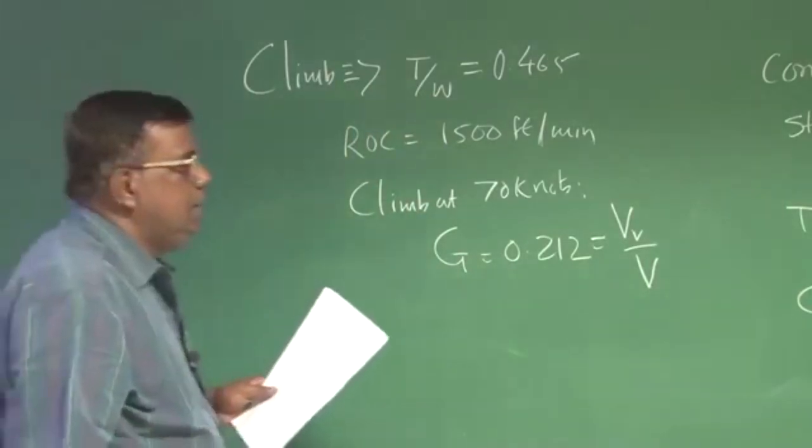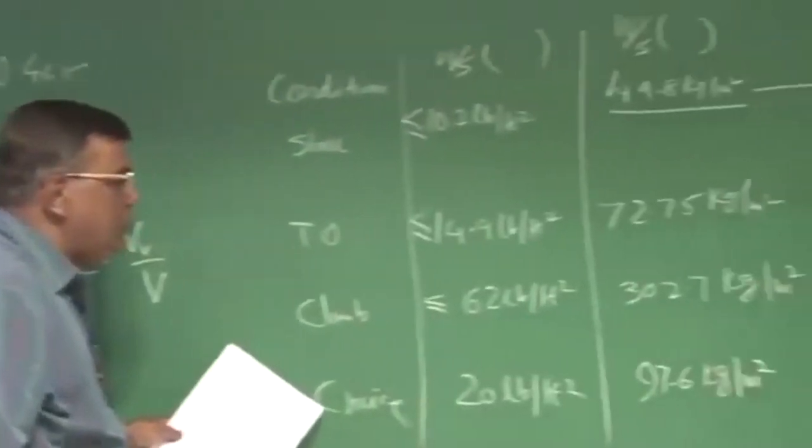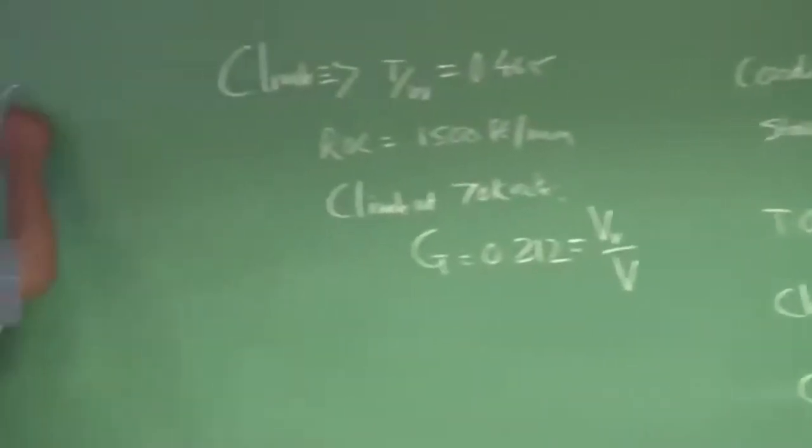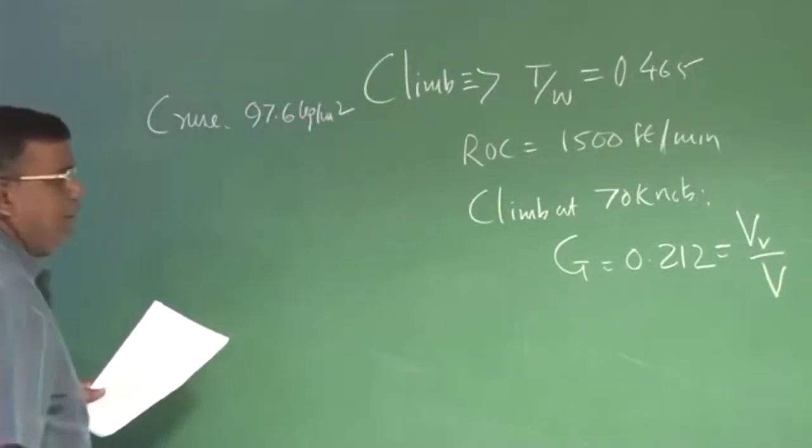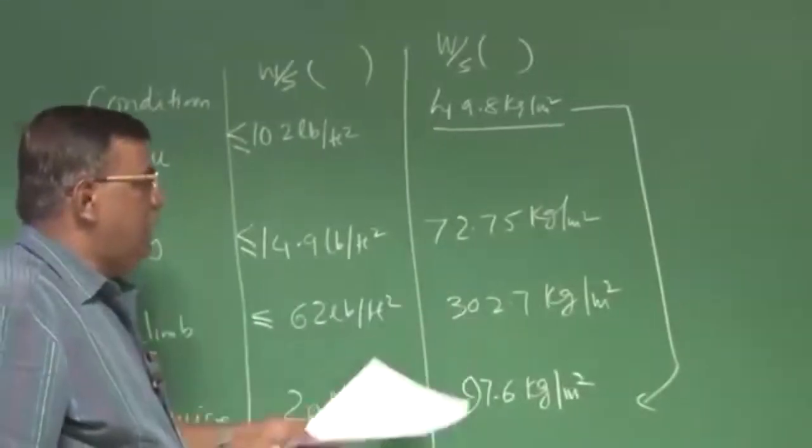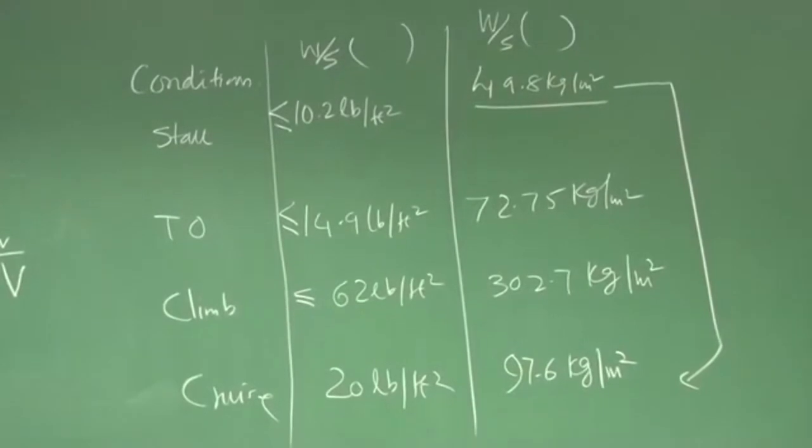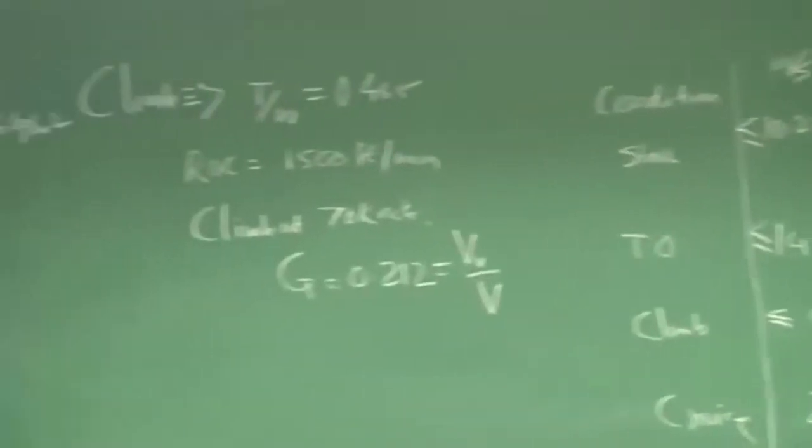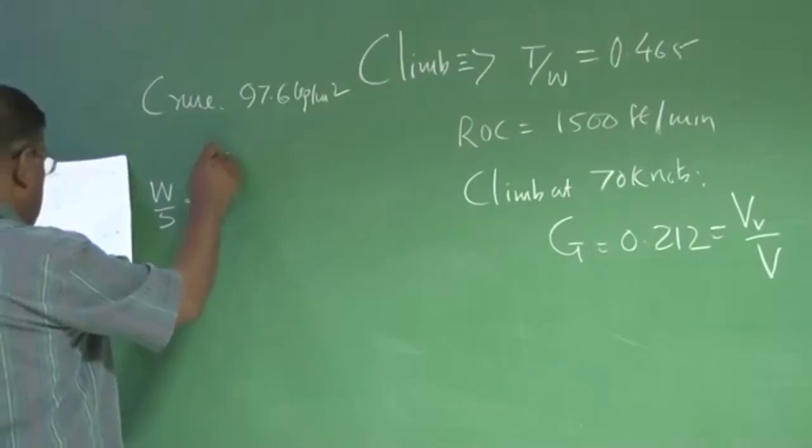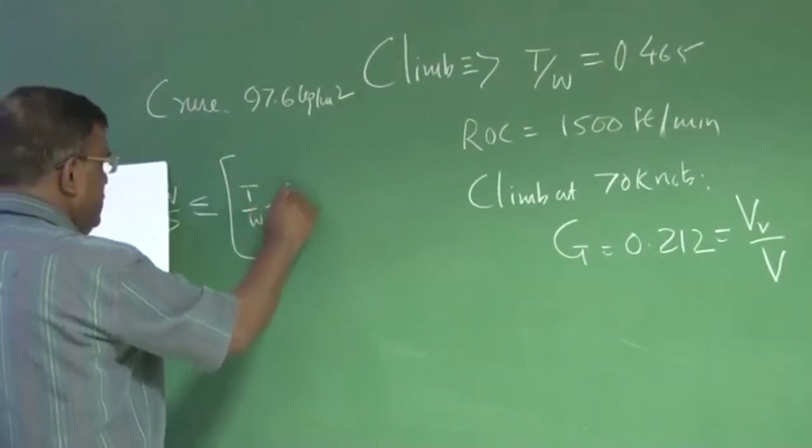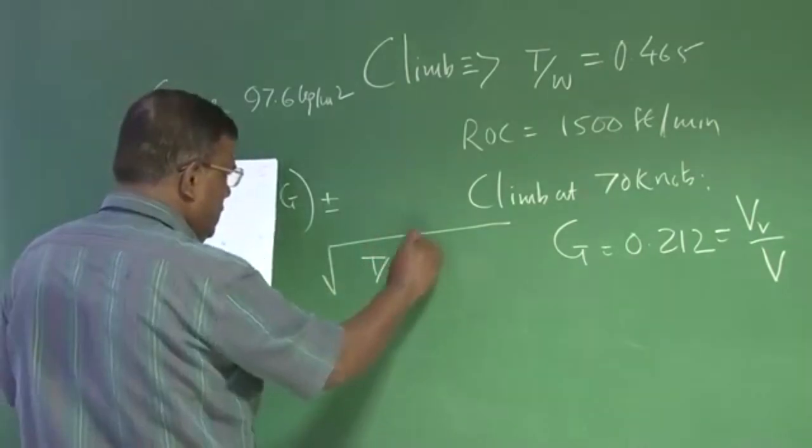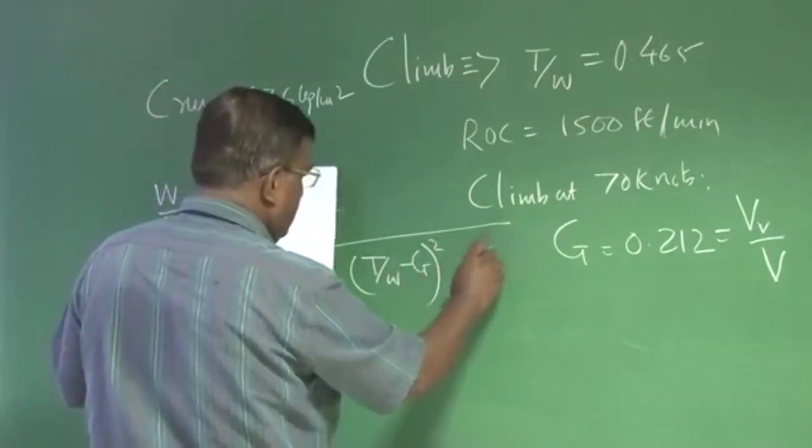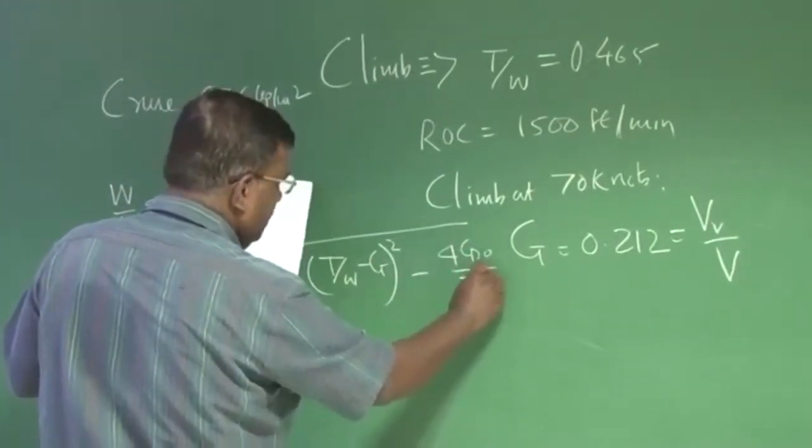If I have chosen cruise W by S as 97.6 kg per meter square, but climb requirement is around 302.7 kg per meter square. What is the implication of it? If you see, we write W by S less than equal to T by W minus G plus minus under root of T by W minus G square minus 4 CD0 by pi aspect ratio E.